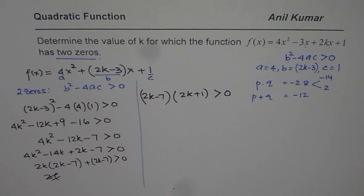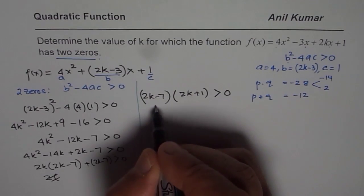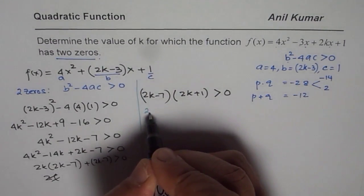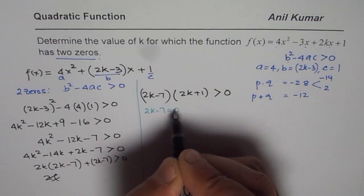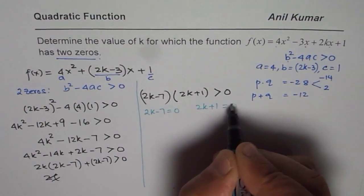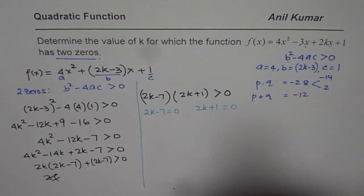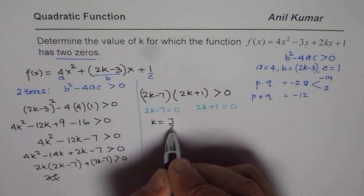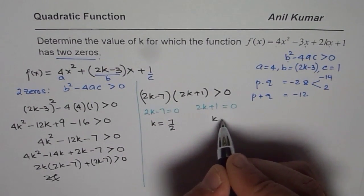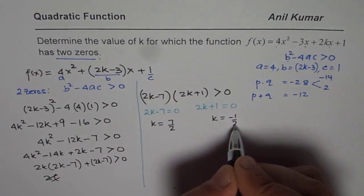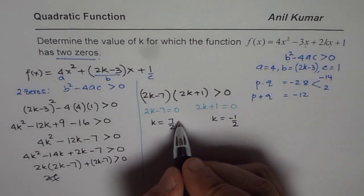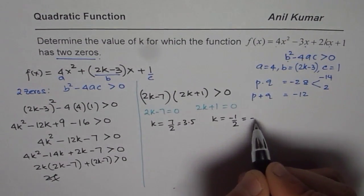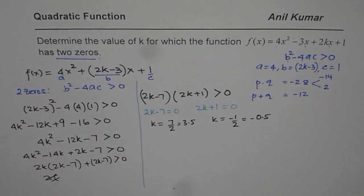Now how do we get a solution from here? We will find the zeros. That means 2k minus 7 equals 0 or 2k plus 1 equals 0, and solve for them. So here we get k equals 7 over 2, and here we get k equals minus half. We can write 7 over 2 as 3.5 and minus half as minus 0.5.